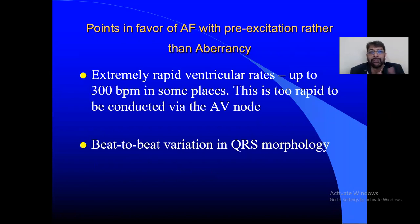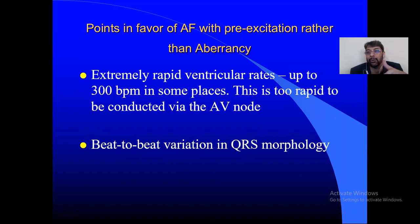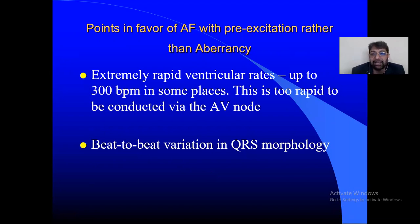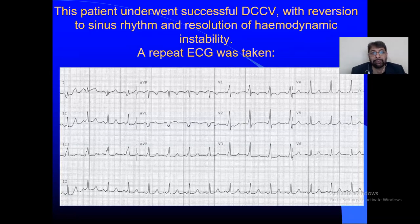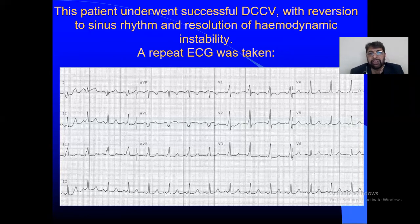The diagnosis is clear-cut AF with pre-excitation rather than aberrancy. The points in favor are: extremely rapid ventricular rate, which is unusual if conduction is going through the AV node — it's only possible when there is an accessory pathway conveying complexes alongside the AV node. The beat-to-beat variation in QRS morphology is the key point in favor of pre-excitation. The patient was unstable, so management was easy to decide — successful DC cardioversion with reversion to sinus rhythm.